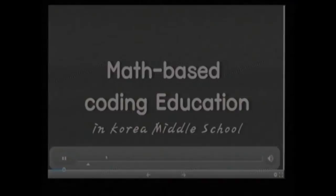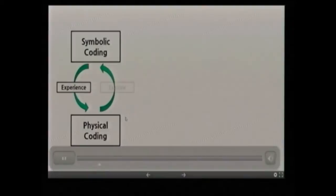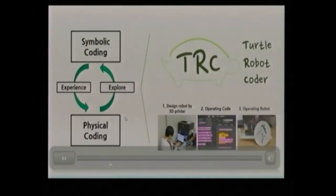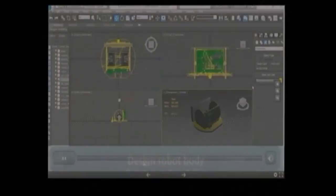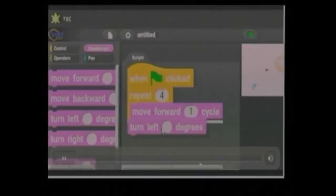This is a project conducted in middle school. First, they designed a robot body and printed it with a 3D printer. Then they made the operating code, which is controlled by mobile phone, smartphone.